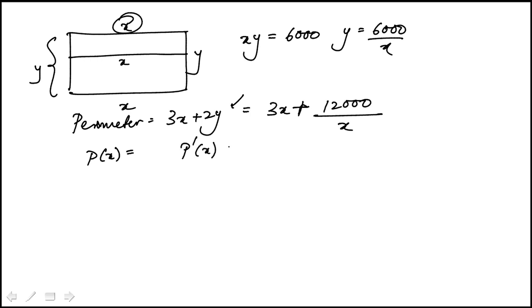I'm going to find the first derivative, which is 3 minus 12,000 over x squared. Set it to zero to find the extrema, and that means x squared equals 12,000 over 3, which is 4,000.